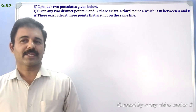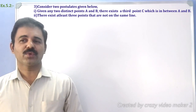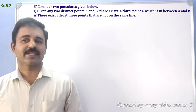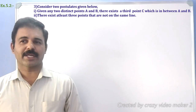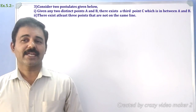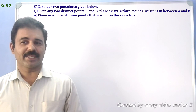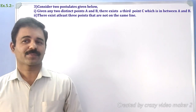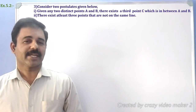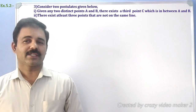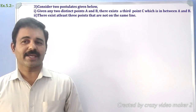First postulate: given any two distinct points A and B, there exists a third point C which is in between A and B. Second postulate: there exist at least three points that are not on the same line.